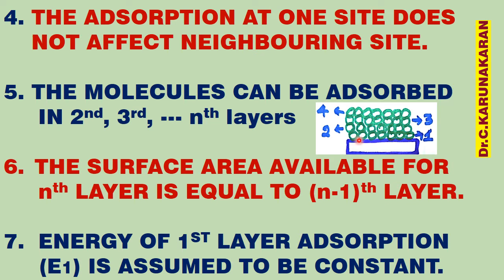The adsorption of gases at one site does not influence the adsorption at the neighboring site — this molecule does not influence the adsorption of this molecule. The gaseous molecules can be adsorbed in the first layer, second layer, up to the nth layer. The surface area available for the first layer is equal to that of the second layer, third layer, etc. For example, if there are 10 molecules in the first layer, there are 10 molecules in the second layer as well, so the surface area per layer is equal.